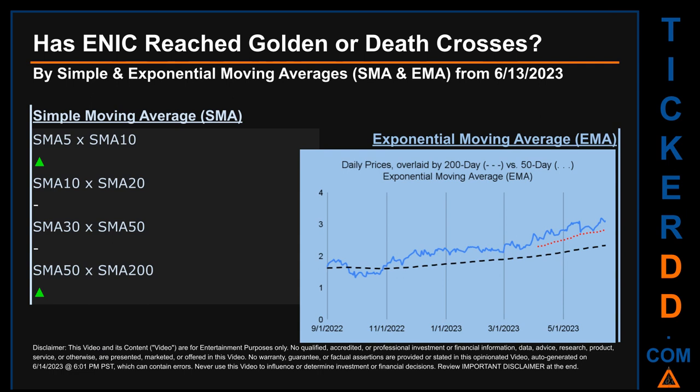Golden cross and death cross are basic signals that compare average prices across two specified trade day ranges — a short-term versus a long-term range, for example, 5-day versus 10 trade days. Essentially, a golden cross is a bullish signal: it appears when a ticker's short-term moving average crosses above its long-term average. Vice versa, a death cross is a bearish signal when the short-term crosses below its long-term moving average. For our opinionated analysis off third-party and abstracted data, we decided to look at both simple moving average (SMA) and exponential moving average (EMA).